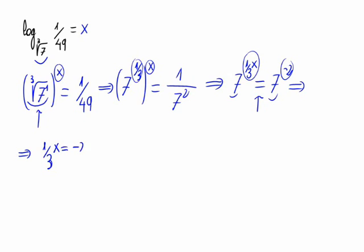So let's make them equal: 1 third of x is equal to minus 2. So x - the 3 goes multiplying - and x will be minus 6.